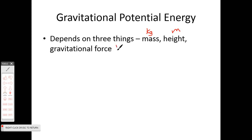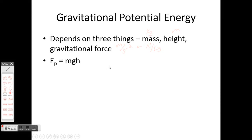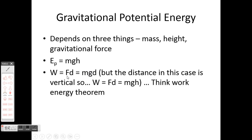Gravitational acceleration is measured in meters per second squared — and you'll also sometimes see this in newtons per kilogram, which is more of a Physics 20 thing. The formula is Ep = mgh, where p stands for potential: m is mass, g is gravitational acceleration, and h is height — kilograms, meters per second squared, and meters. Potential energy is measured in joules.